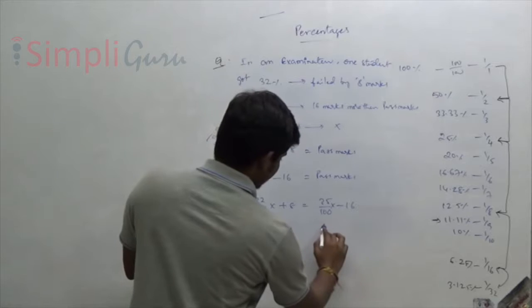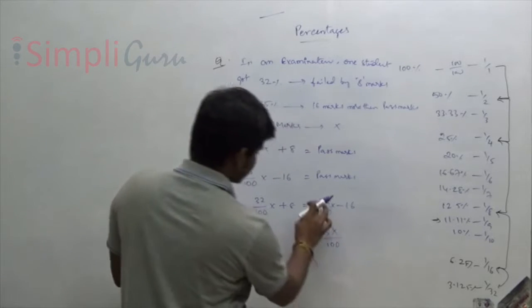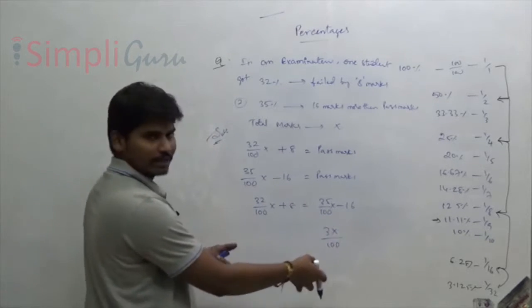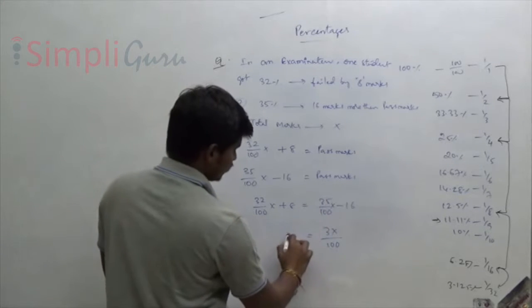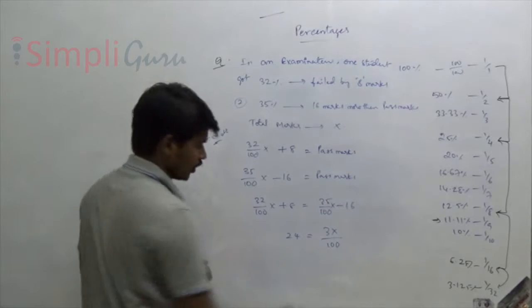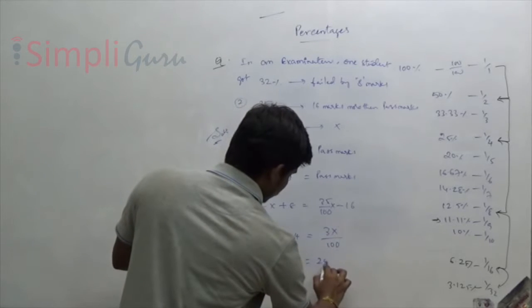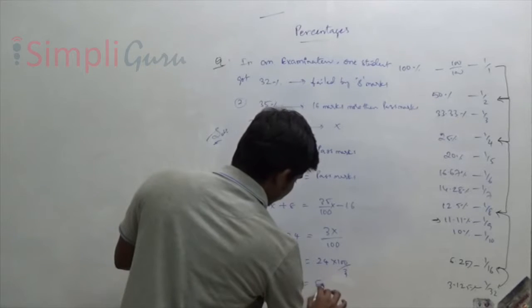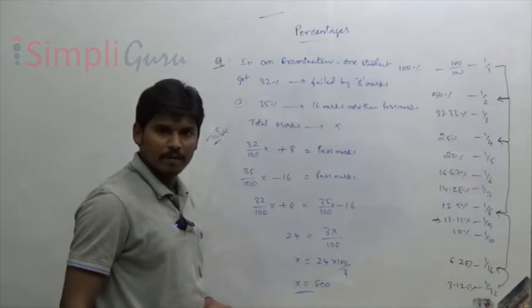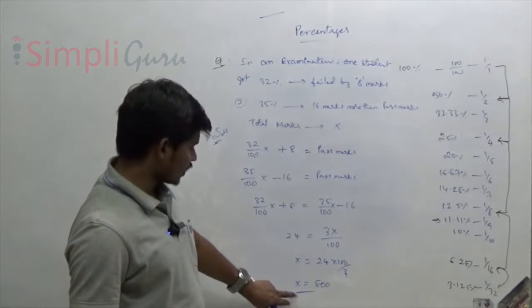Rearranging: bring the X terms to one side — 35 minus 32 gives 3X/100, and 8 plus 16 gives 24. So 3X/100 = 24, which gives X = 24 × 100/3 = 800. Total marks equals 800.